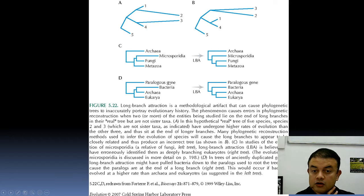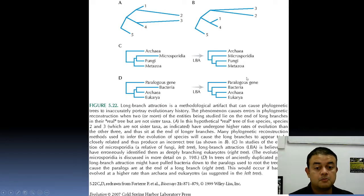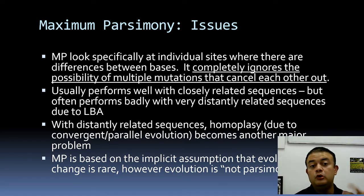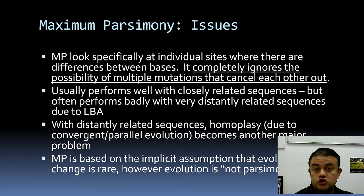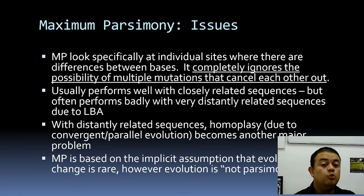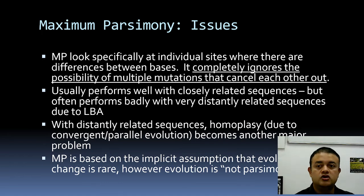Another issue is that parsimony looks at individual sites with differences between bases and completely ignores the possibility of multiple mutations that cancel each other out. This is a significant problem with maximum parsimony. It usually performs well with closely related sequences but often performs badly with very distantly related sequences because of long branch attraction. That is the biggest limitation of parsimony-based phylogenetic reconstruction.